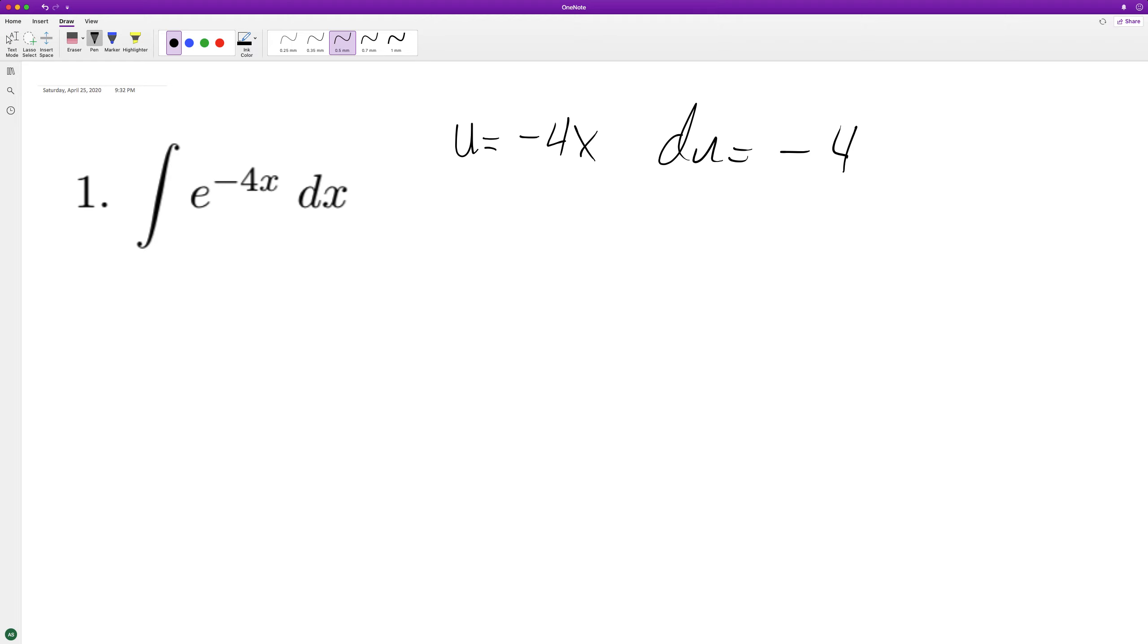So if you notice here, to get du equal to dx, there's no negative 1/4, so we need to multiply by negative 1/4 for du.